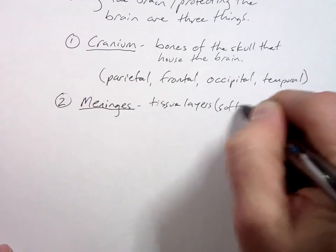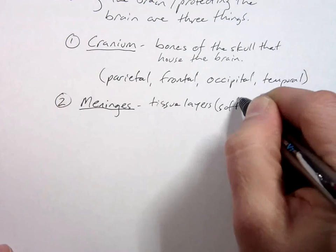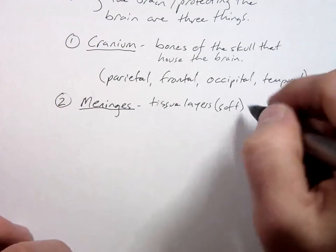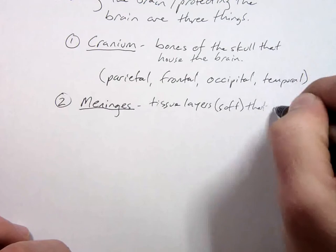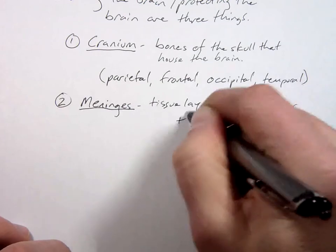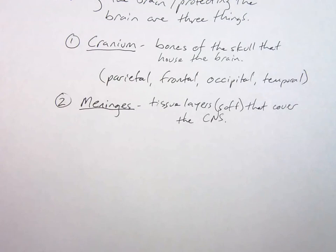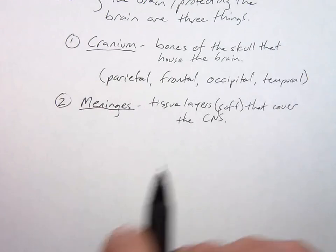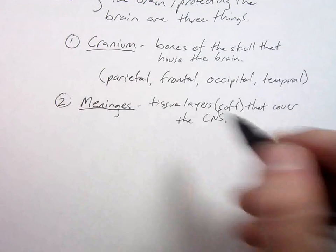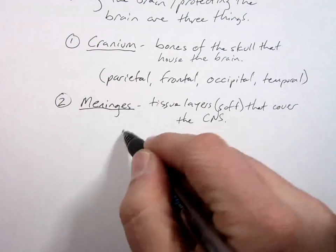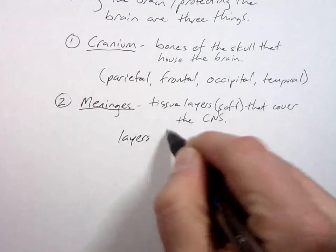Are soft tissue layers that cover the CNS. It's not just the brain, the meninges cover the spinal cord as well. Around the brain they're called cranial meninges, around the spinal cord they're spinal meninges. There are several layers, so layers from outside to inside.